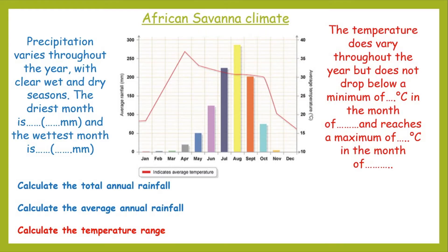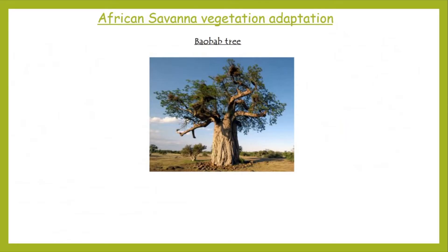Because we've got that extended dry season — still with pretty high temperatures, it never really drops below 16 degrees Celsius — we've got this very arid season where very little to no precipitation falls at all. How on earth does vegetation cope with these extremes of high temperatures and dry periods? We're going to look at two types of trees. The first is a baobab tree. Put a subheading: African Savannah Vegetation Adaptation. Stick a baobab tree picture down with room to write around it — we're going to talk about four or five different adaptations.